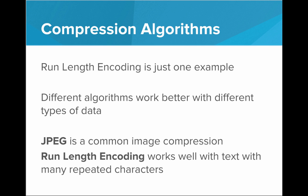Now there are a lot of compression algorithms. Run length encoding is just a single example. This is a huge field of computer science, finding better and better algorithms to make data smaller. There's a lot of algorithms to choose from, and it turns out different algorithms work better with different types of data. For example, JPEG is a common image compression algorithm, whereas run length encoding works really well with text that has many repeated characters.